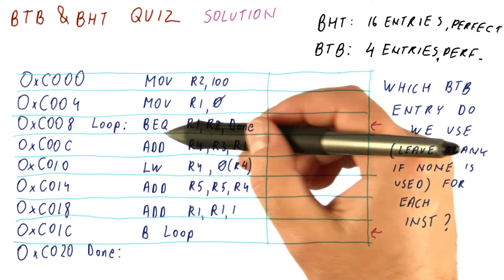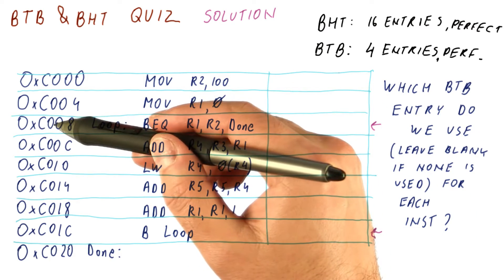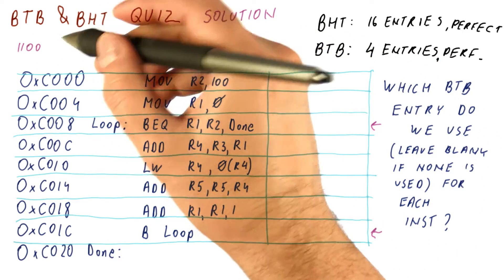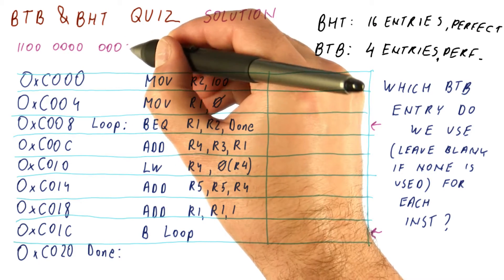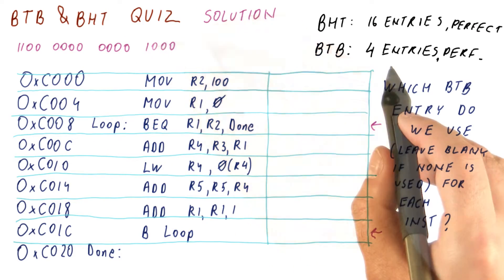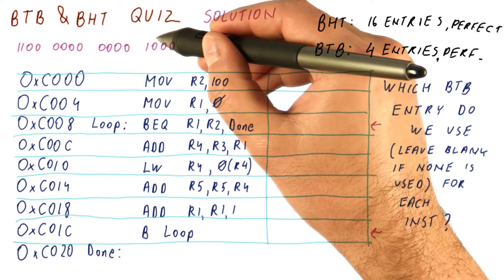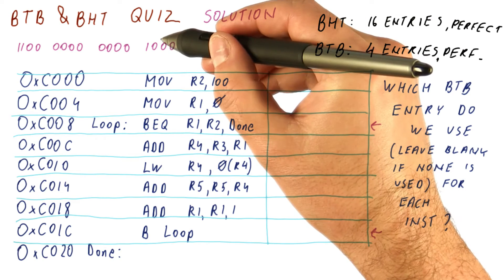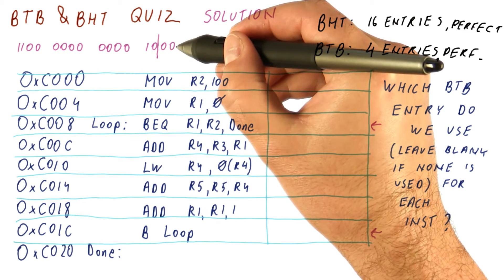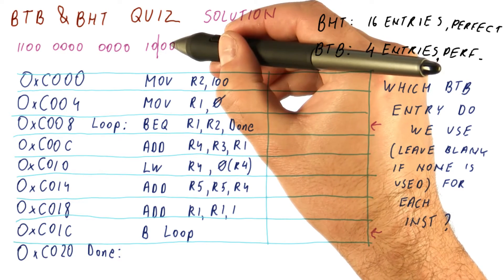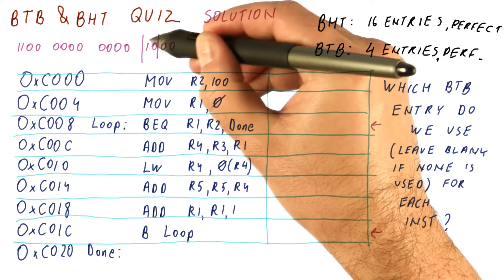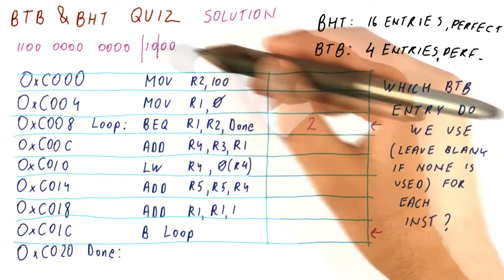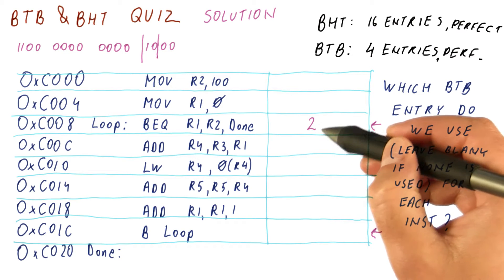How do we determine which BTB entry to use? We look at the address, the same way we did it for the BHT. In this case, the address is C008. The BTB has four entries, so we take the next two bits — not the lowermost two bits that are always the same for all instructions — to tell us which of the four entries. This gives us the BTB entry number for the C008 instruction. One zero is two, so we will use entry number two.